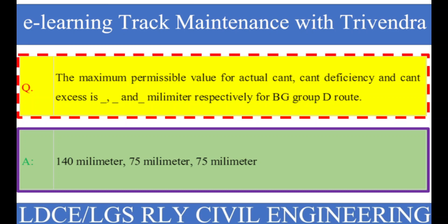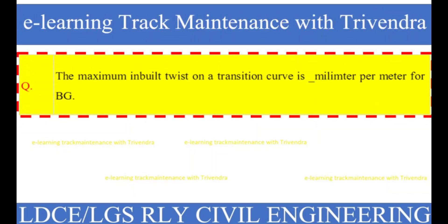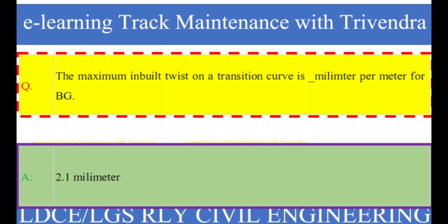Question number 63: The maximum inbuilt twist on a transition curve is how many millimeters per meter for BG? The right answer is 2.1 millimeters per meter.